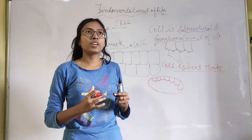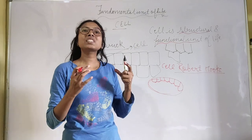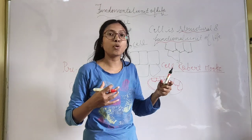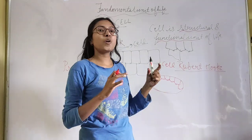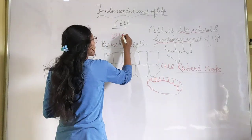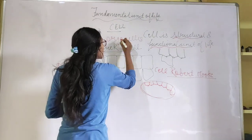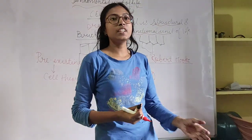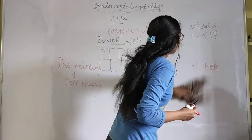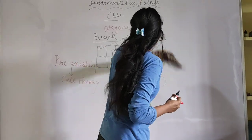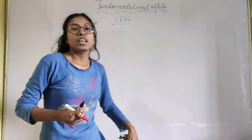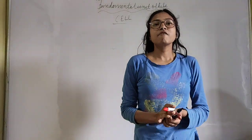How is a single cell able to perform such huge functions that keep our body alive and functioning properly? A cell consists of various organelles, each present for performing various functions. There are many components present in a cell that help in its functioning.